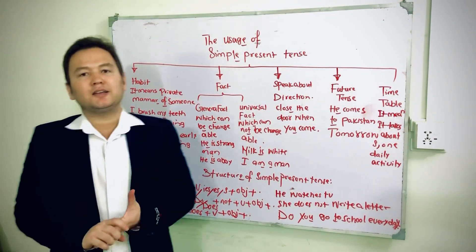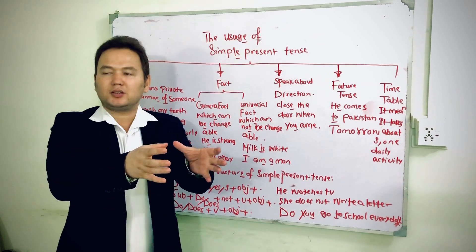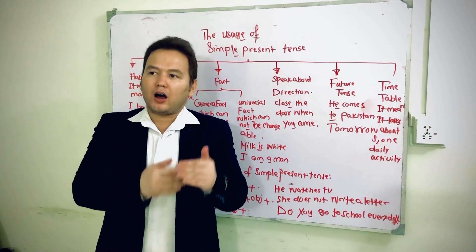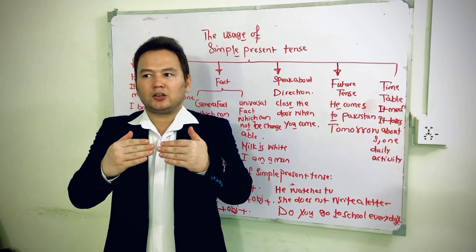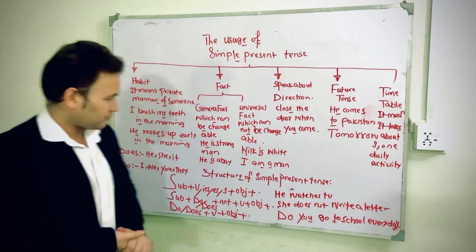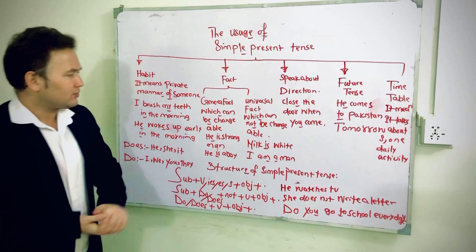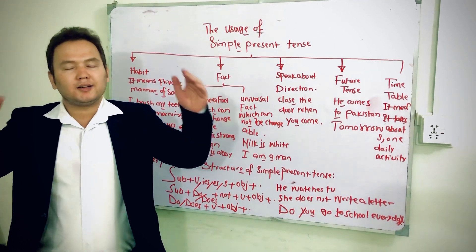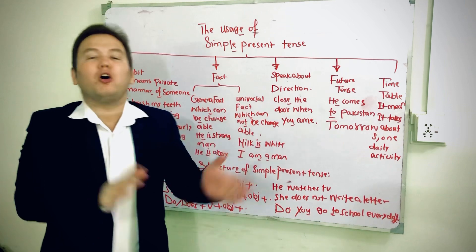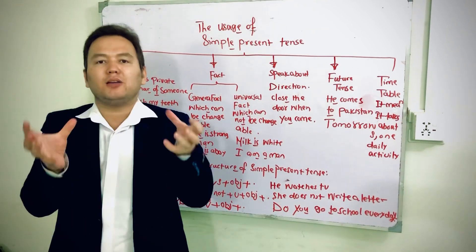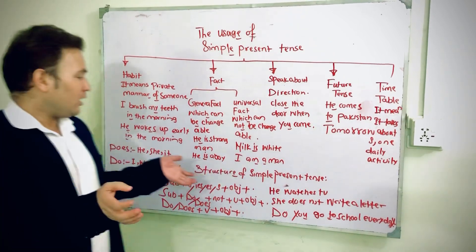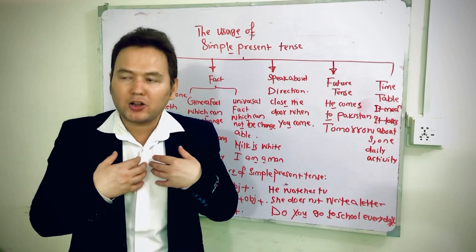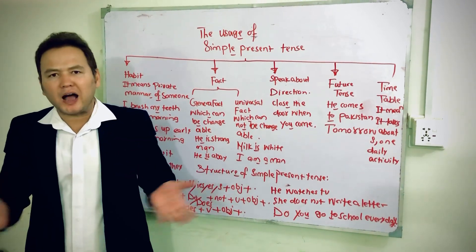For instance, 'He is a boy' — right now he is a boy, but as time passes he becomes a young man, then an old man. His physical and mental condition changes. Universal fact, on the other hand, cannot be changed — no matter how much time passes, it has no direct effect. For example, milk is always white. I am a man — no matter how much time passes, I cannot become a woman. This is a universal fact.